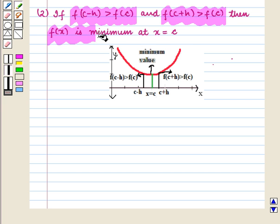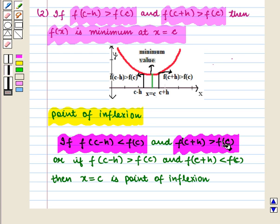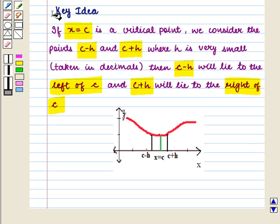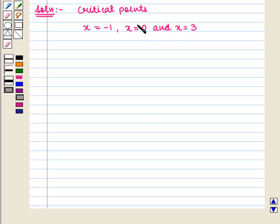If f(c - h) > f(c) and f(c + h) < f(c), then x = c is the point of inflection. These results will work as the key idea for the solution of the given question. We are given the critical points x = -1, x = 0, and x = 3, and we have to check whether these points are maximum, minimum, or points of inflection.